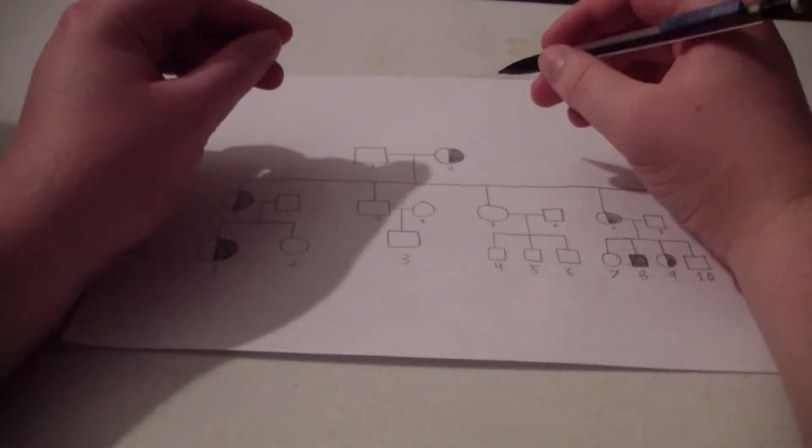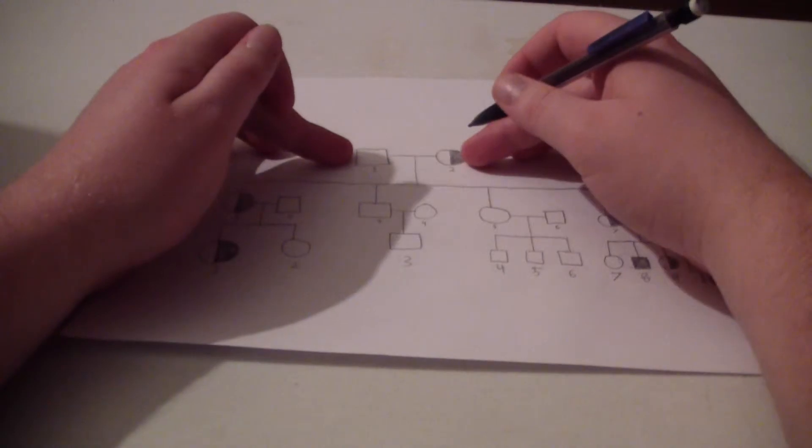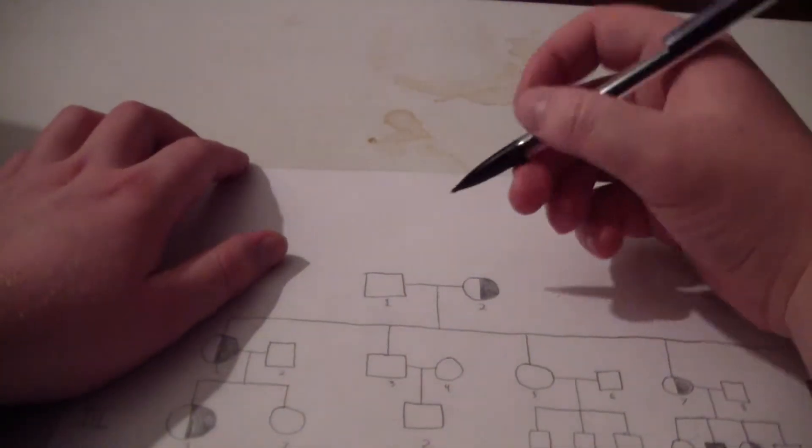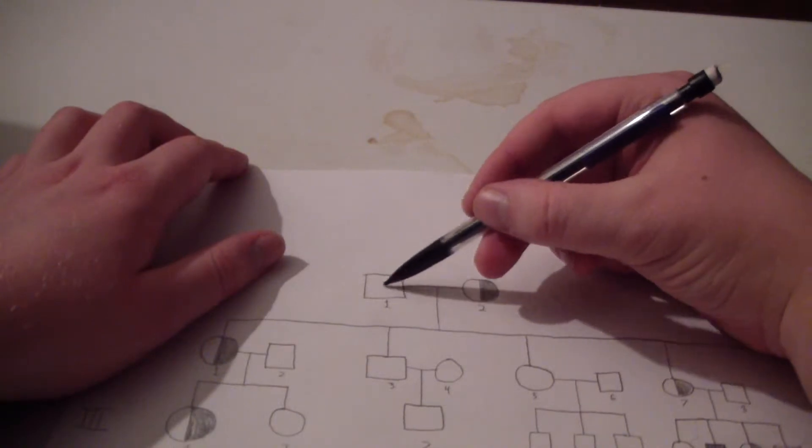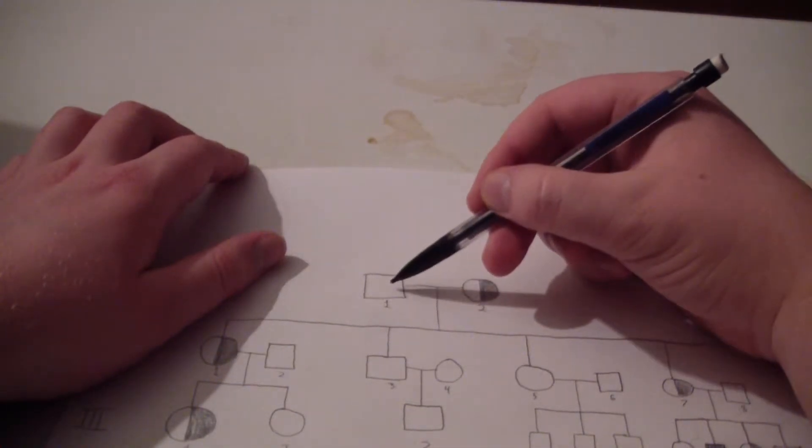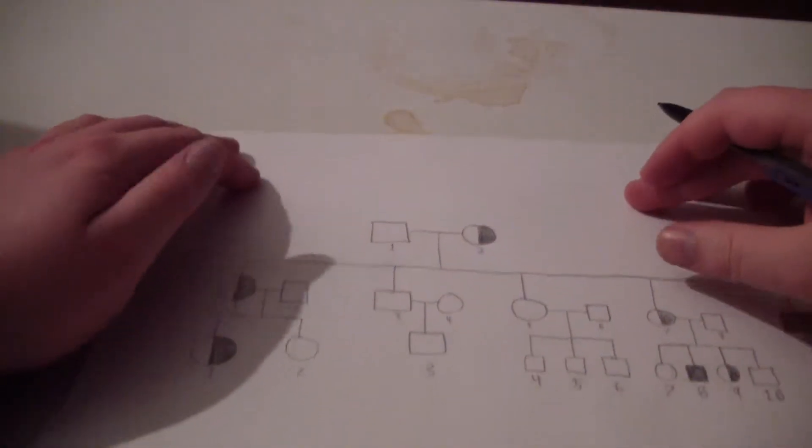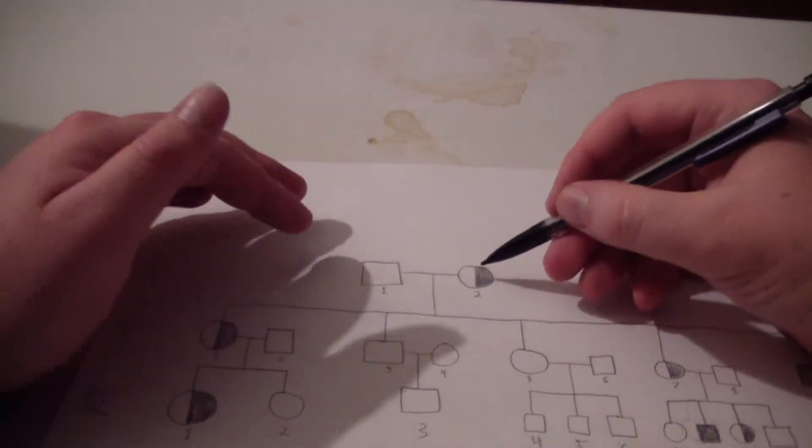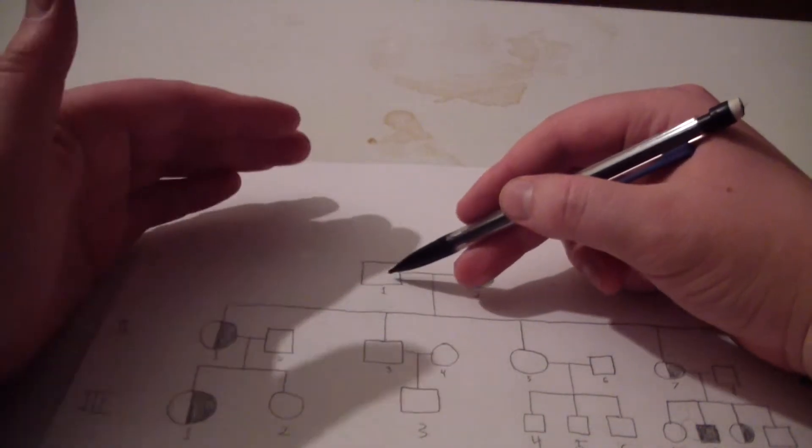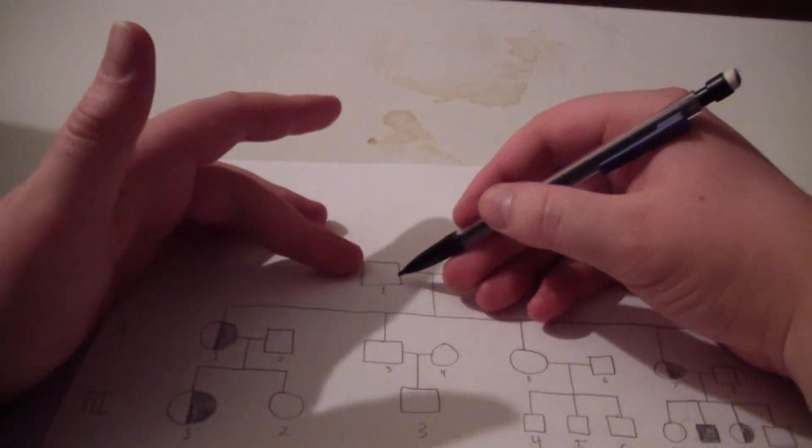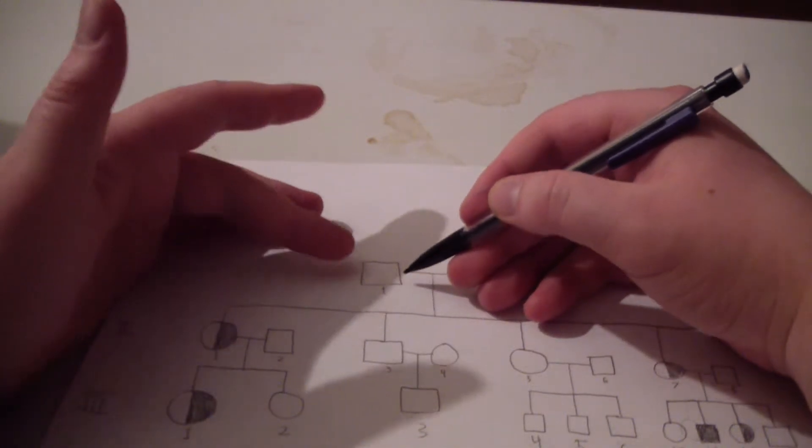Let's take a look at the first two individuals that we see here in this pedigree. We have generation 1, individual 1 and individual 2. Individual 1, which would be grandpa in this family, is not a carrier for Lesch-Nyhan syndrome, nor does he have it.